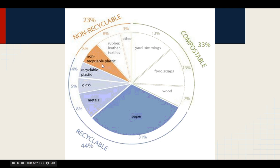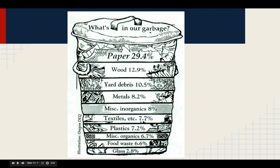This waste is a contributing factor to what we'll discuss regarding acids and bases, acid rain, and the pollutants in our atmosphere. This last chart shows what's in our garbage: paper at 29.4%, wood, yard debris, metals, textiles, plastic — a lot of things that hopefully are mostly recyclable, but some are not, and some aren't placed in the correct recyclable containers.